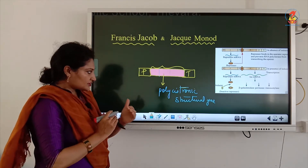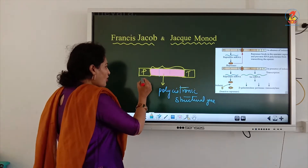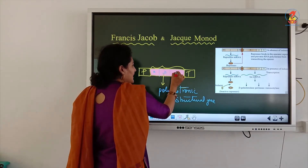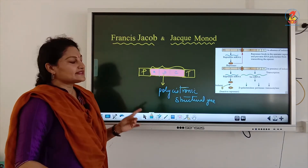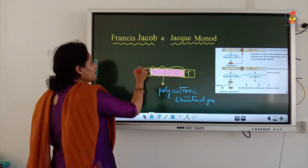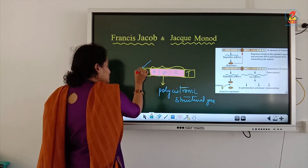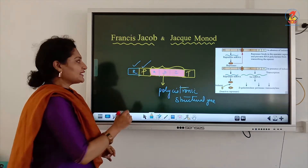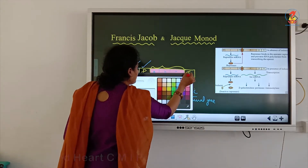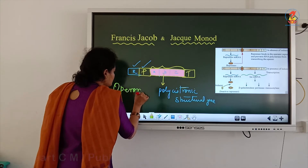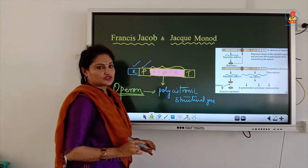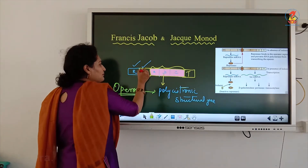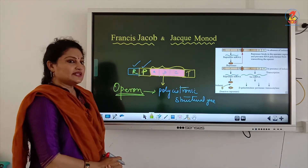The next concept I am going to introduce is operon. When all these cistrons — cistron A, cistron B, and cistron C — are controlled by a common promoter and a common regulator, then it is known as an operon. So an operon is when many structural genes are regulated by a common promoter and common regulator.